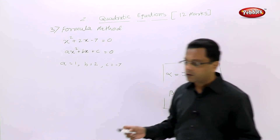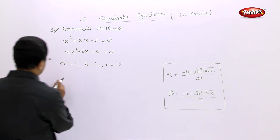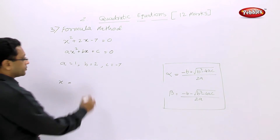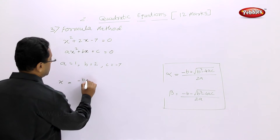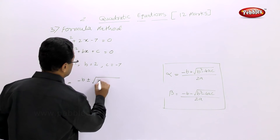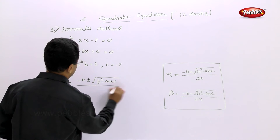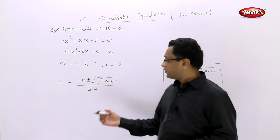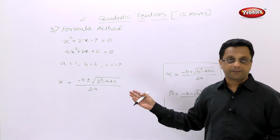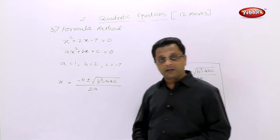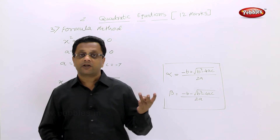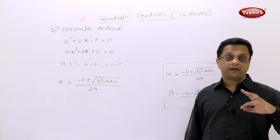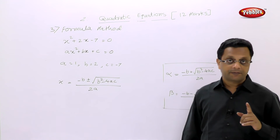The roots are given by x = (−b ± √(b² − 4ac)) / 2a. Be very careful with arithmetic calculations — addition, subtraction, division, multiplication, solving brackets, squaring, and square roots must all be done cautiously to avoid silly mistakes.